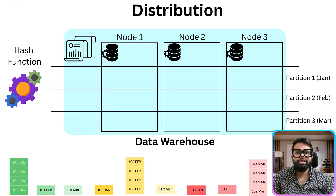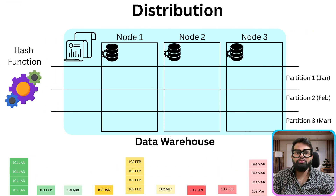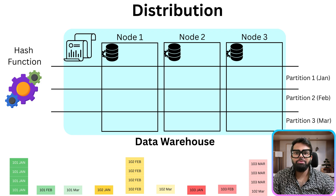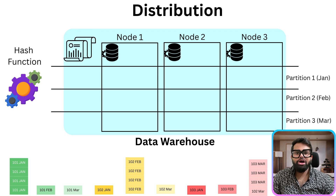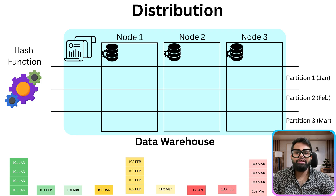Now let's zoom even further into the data warehouse. Assuming we have a 3-node data warehouse, this data will not directly go and sit in a single big machine. It will get distributed across all nodes, and this distribution happens based on the distribution key given while creating the table. The data warehouse automatically distributes the partition rows across physical nodes using a distribution key — in this case, customer ID.